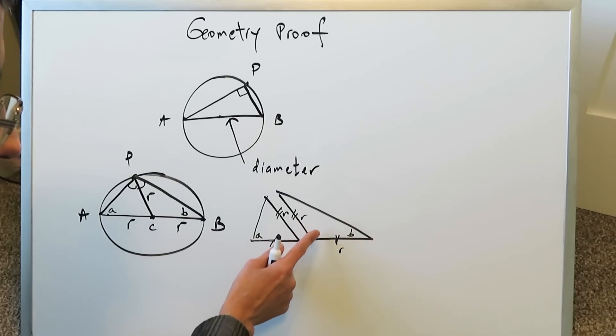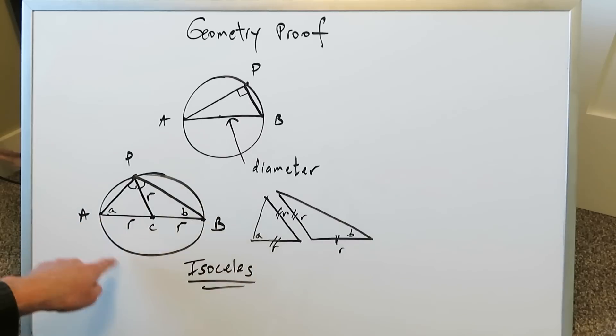What are we essentially looking at? We're essentially looking at isosceles triangles. Why are they isosceles? Because two of the sides are equal, and they're equal because two of the sides are radii. Radius is always equal no matter which point on that circle you're connecting the center with.